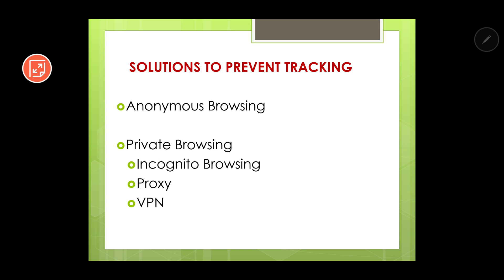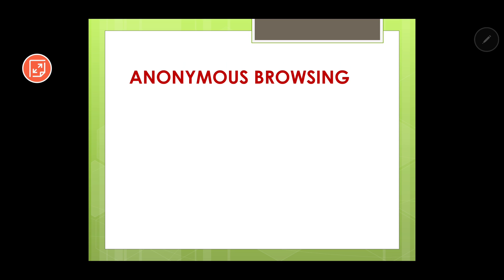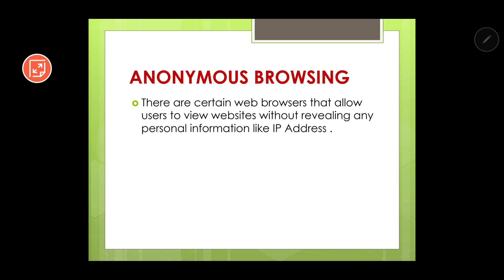Let's start with anonymous browsing. The word 'anonymous' means hiding your identity — if you do not want to disclose your identity but still want to do something, it is known as anonymous. In anonymous browsing, certain websites allow users to view websites without revealing personal information like IP address. Websites can track us mainly by IP address. IP address is a numerical label attached to every device connected to a network.